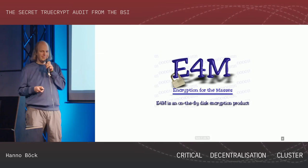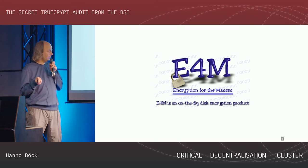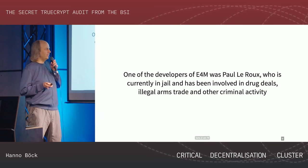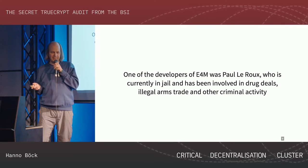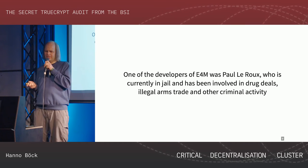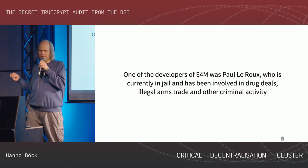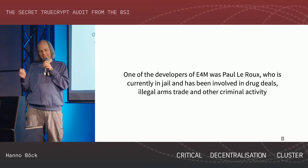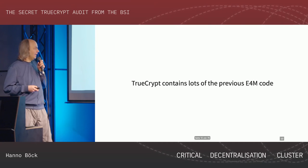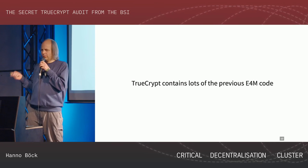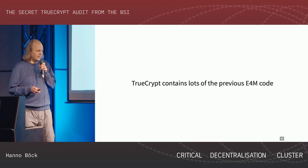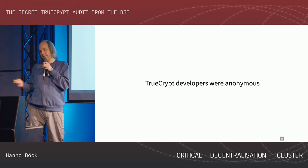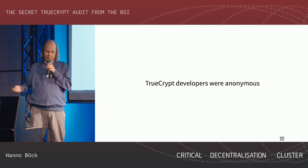There is an older encryption software called Encryption for the Masses, which is kind of the predecessor of TrueCrypt. That was apparently developed in part by a guy called Paul LaRue, who is currently in jail, as far as I understand, and has been involved in drug dealing and other criminal activity - which is a lot of potential for conspiracy theories. TrueCrypt contains a lot of the code from the original Encryption for the Masses. The developers of TrueCrypt were kind of anonymous; it's not clear if this Paul LaRue guy was still involved in TrueCrypt or not.